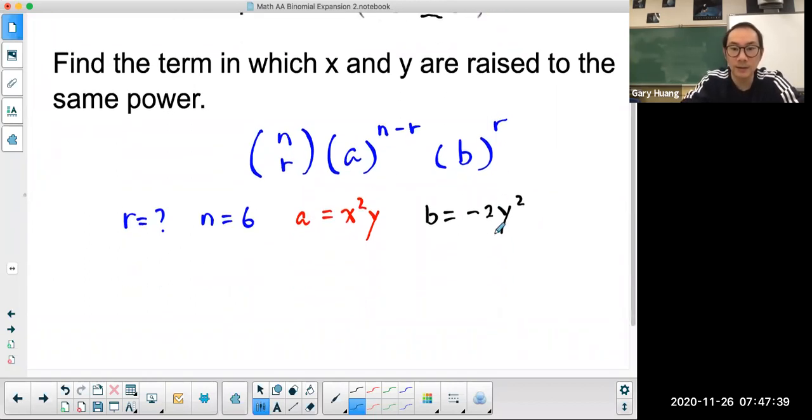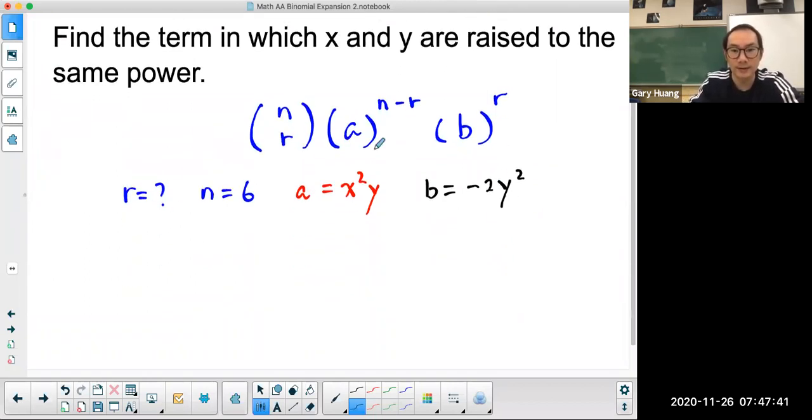Now I'm going to put all those things into the binomial theorem. 6 choose r, x squared y to the power of 6 minus r, negative 2y squared to the power of r.